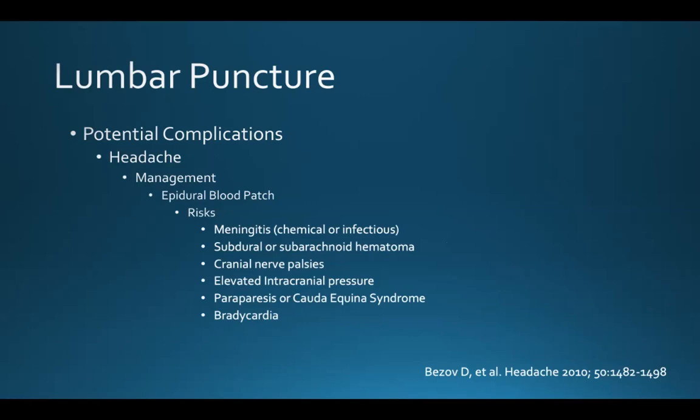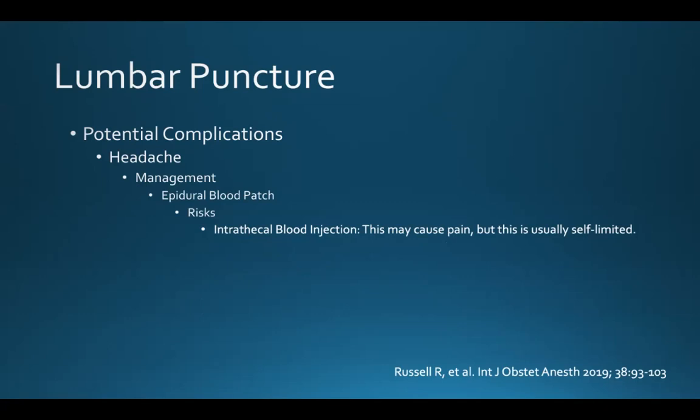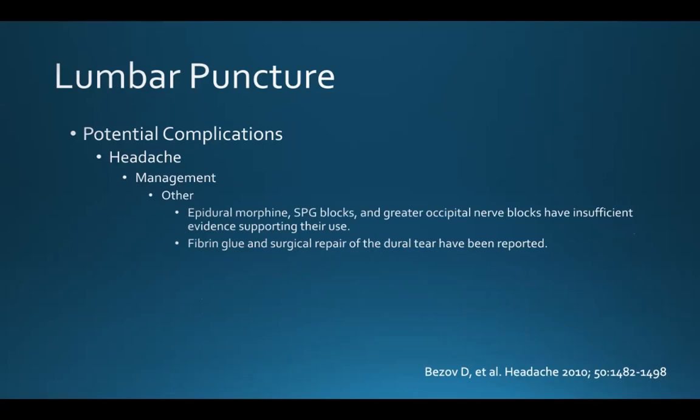There are risks to an epidural blood patch, including meningitis, subdural or subarachnoid hematoma, cranial nerve palsies, elevated intracranial pressure, periparesis or cauda equina syndrome, and bradycardia. Intrathecal blood injection can occur accidentally and may cause pain, but is usually self-limited. Other forms of management may include epidural morphine, SPG blocks, and greater occipital nerve blocks, but there's insufficient evidence supporting their use. Fibrin glue and surgical repair of the dural tear have also been reported.